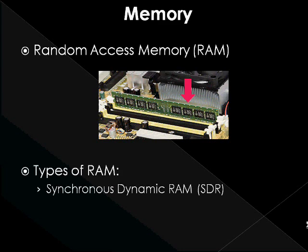Synchronous dynamic RAM, SDRAM, has a synchronous interface, meaning that it waits for a clock signal before responding to control inputs, and is therefore synchronized with the computer's system bus. Double data rate, DDR, memory is very similar to traditional SDRAM, except it transfers data twice during each clock cycle. This doubles the transfer rate of the memory while the system bus stays the same. However, DDR2 is the new type of RAM technology that is very likely going to take over from DDR RAM.